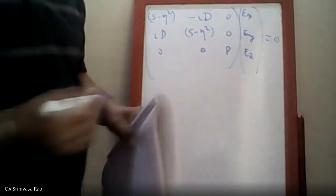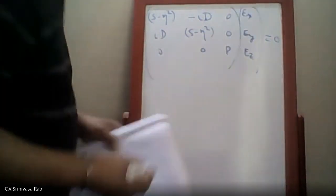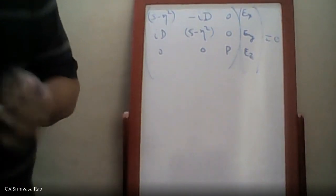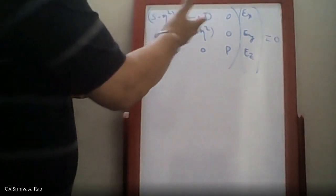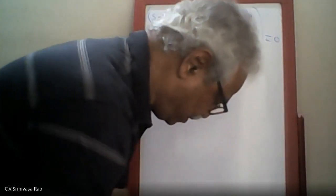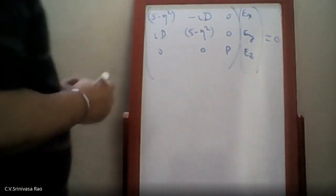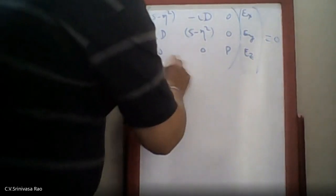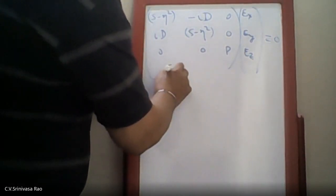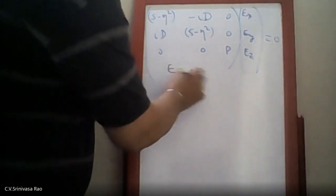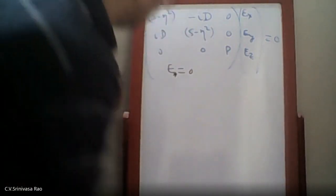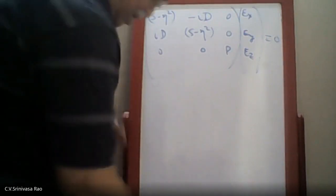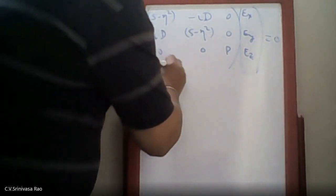These are the components of the electric fields along x, y, and z. Putting theta equal to zero, all the cos theta and sin theta terms get simplified. Now for the solution: one trivial solution is that E_x, E_y, E_z are all equal to zero. We are not interested in that trivial solution; we want non-trivial solutions where E is not equal to zero.